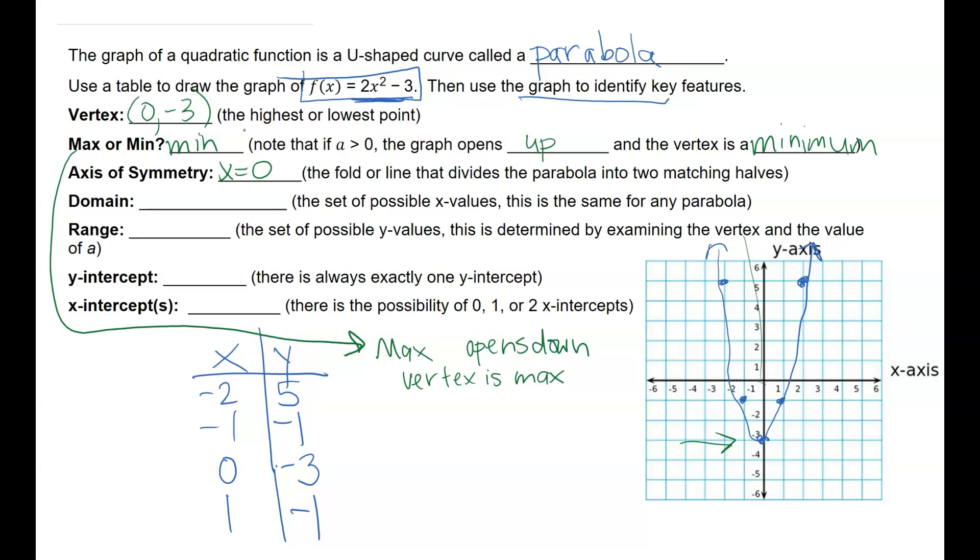The domain is the set of possible x values. And this is the same for any parabola. So the domain, I can actually do all real numbers. Meaning, I could pick any number for the value of x.